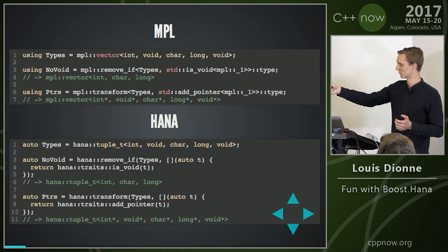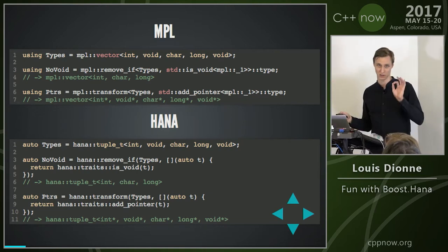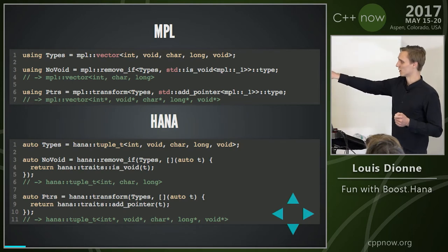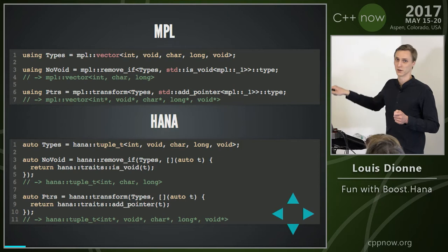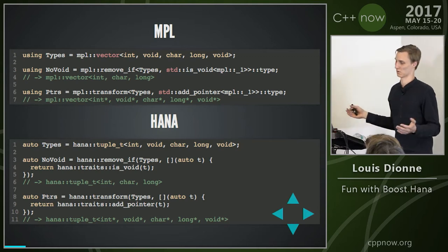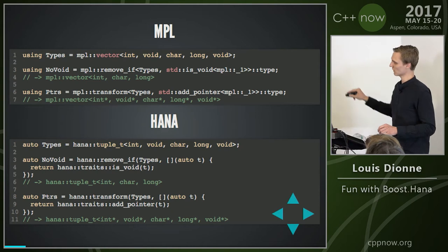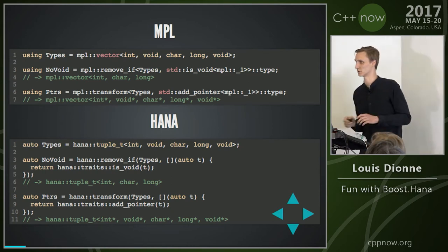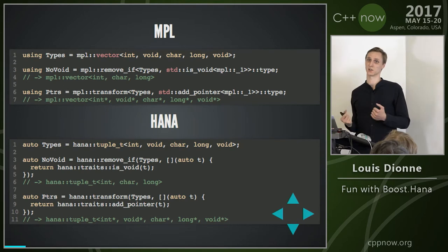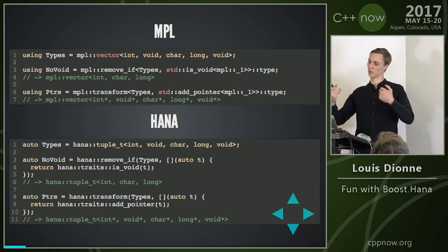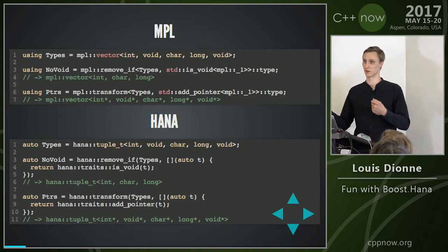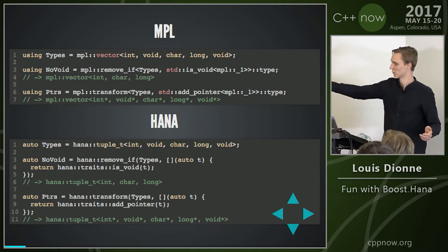Then I can use HANA transform and pass in a generic lambda. What happens is I'm being passed a HANA type for each element of the tuple, and the lambda's operator() gets instantiated with a different HANA type each time. I essentially just call the trait on that and we're done. The only important constraint for lambdas in HANA is that you return an integral constant — a Boolean integral constant — so that the algorithm can determine at compile time whether the result was true or false. If you return a plain bool, the algorithm can't tell at compile time whether it was true or false.